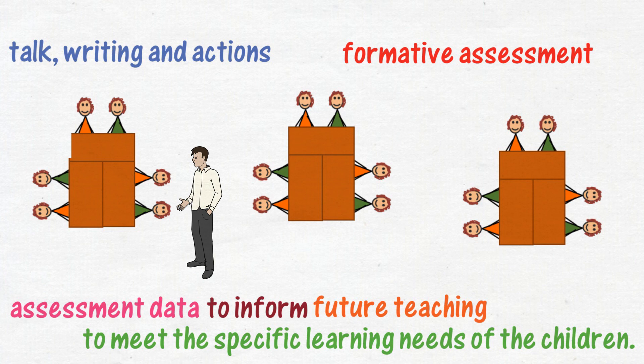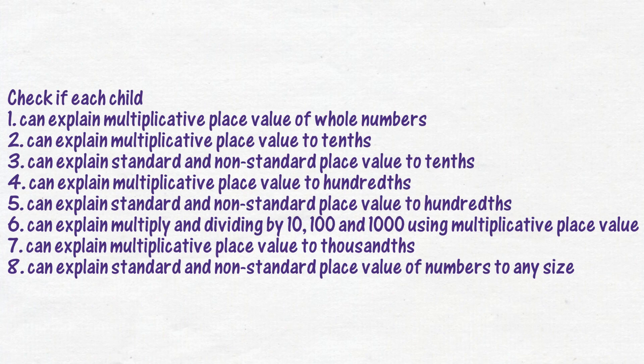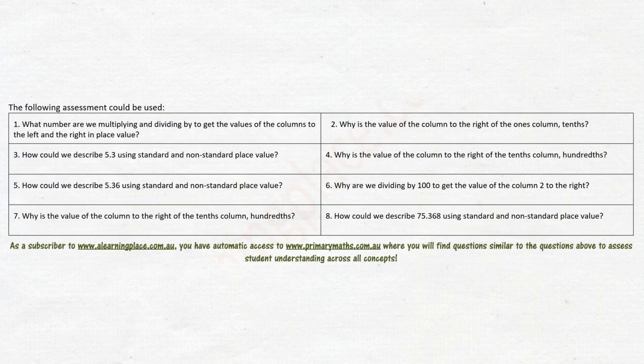But how do you initially know each child's current level of understanding? Check if each child has the understandings listed in the top part of the Term 1 scope and sequence. As a subscriber to A Learning Place, A Teaching Place, you have automatic access to Primary Maths, where you will find questions similar to the questions above to assess student understanding across all concepts and all levels.